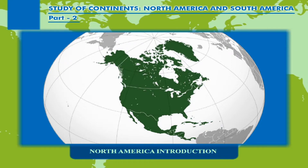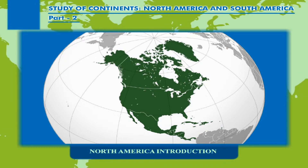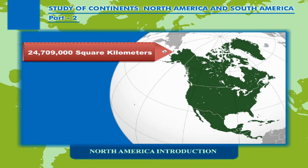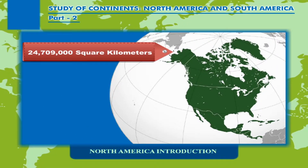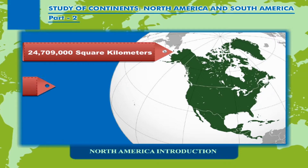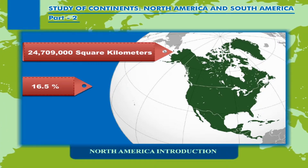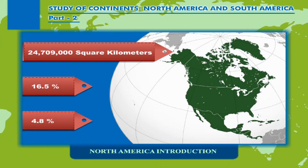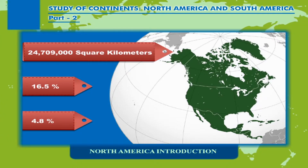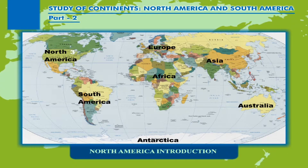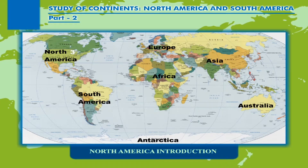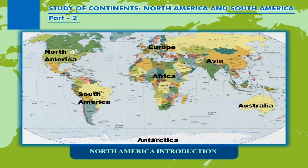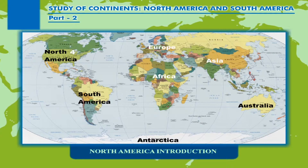North America covers an area of about 24,790,000 square kilometers, about 16.5% of the Earth's land area and about 4.8% of its total surface. North America is the third largest continent by area following Asia and Africa, and the fourth by population after Asia, Africa and Europe.